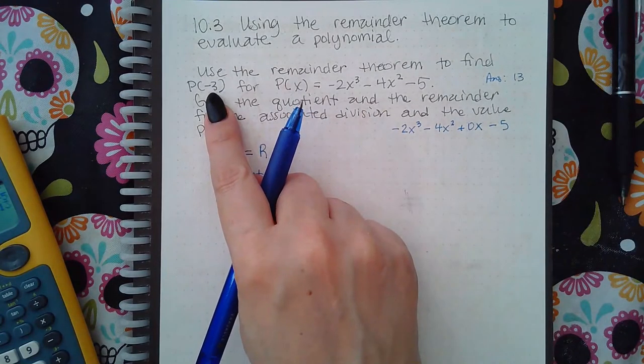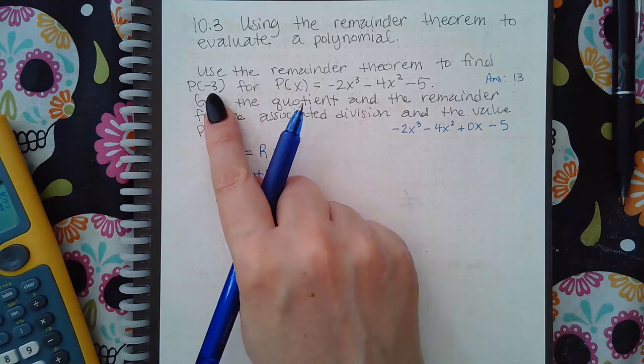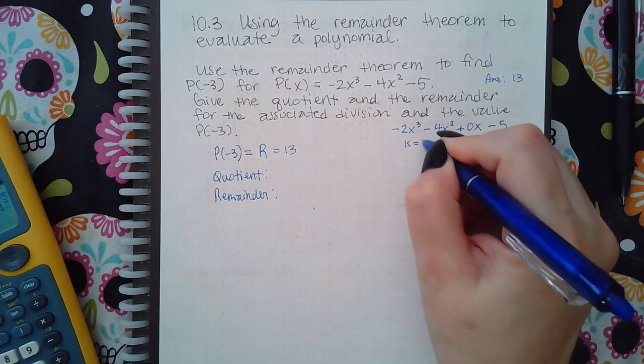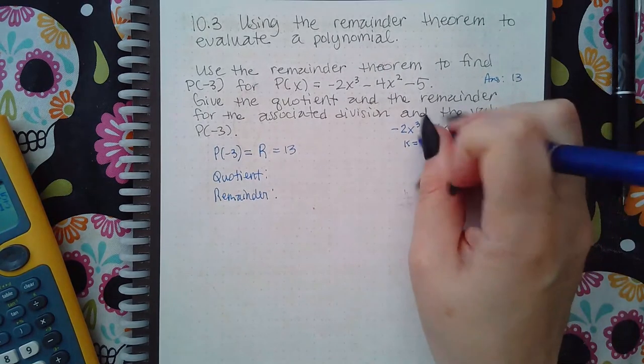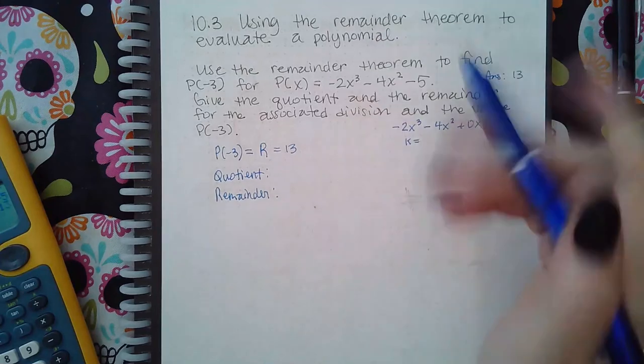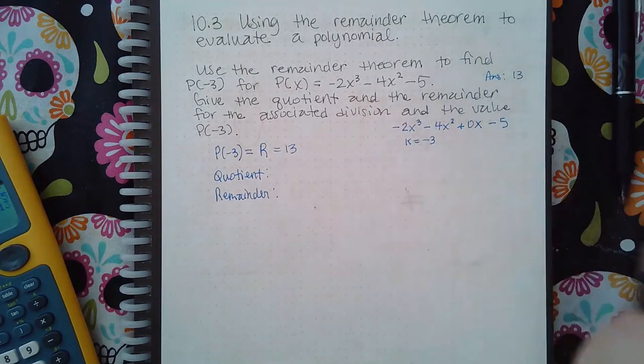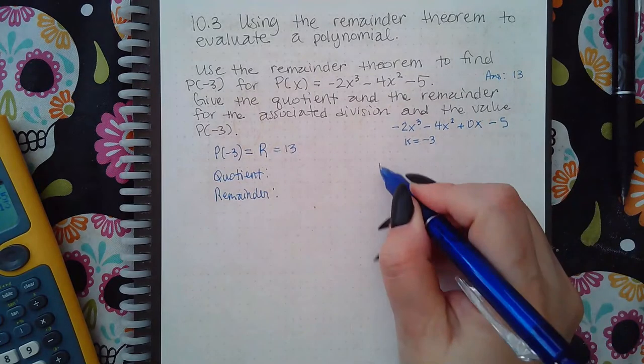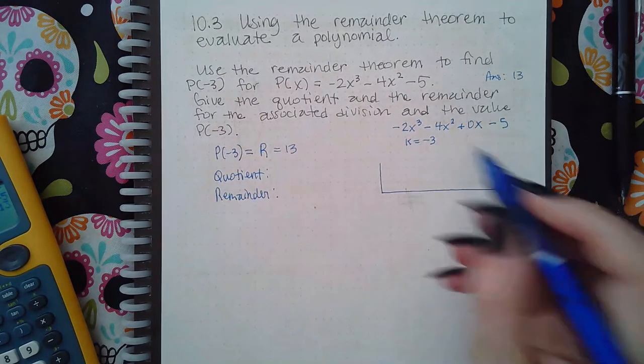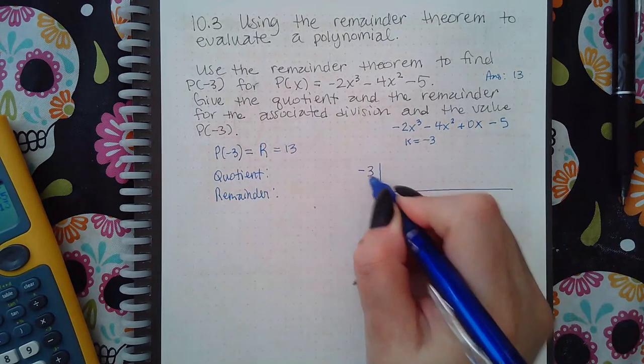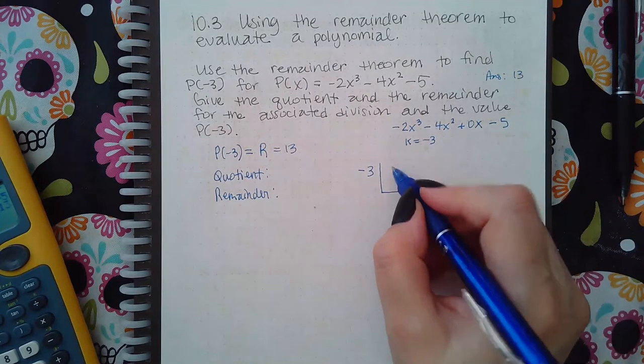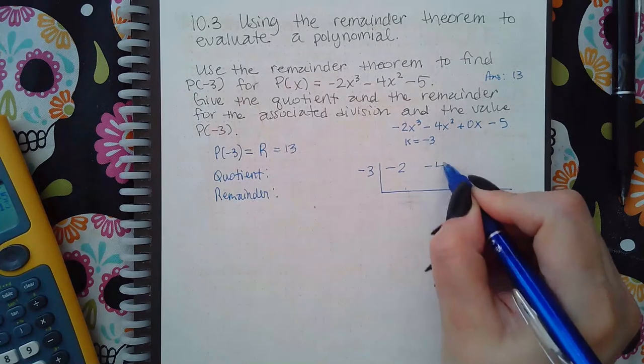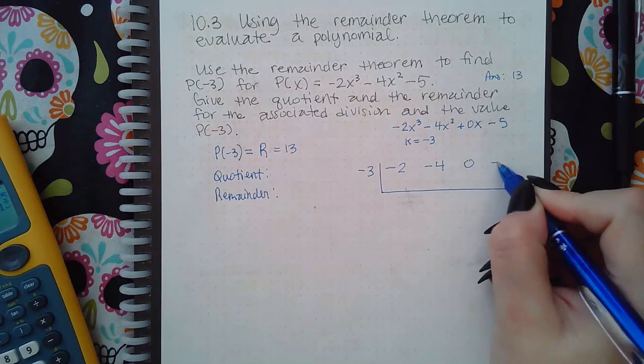Because it's not x minus 3, the k value is equal to -3. Whatever's in that parentheses, that is the k value that you use in the synthetic division. I'm going to put -3 and I'm going to do just the coefficients: -2, -4, 0, and -5.